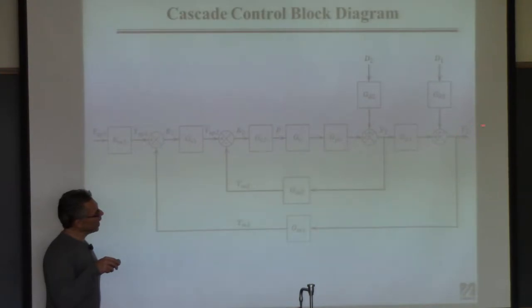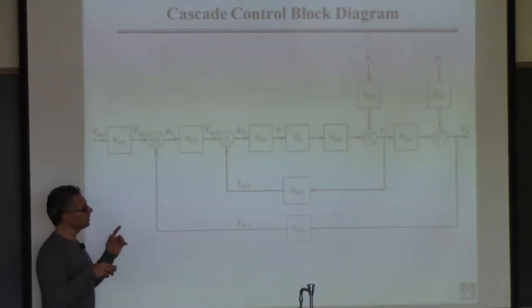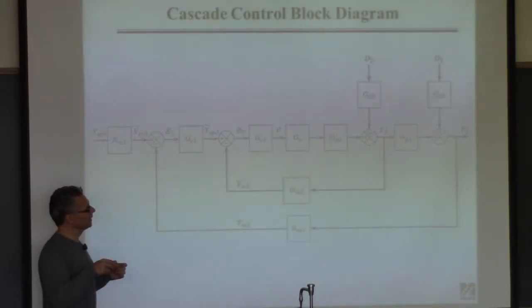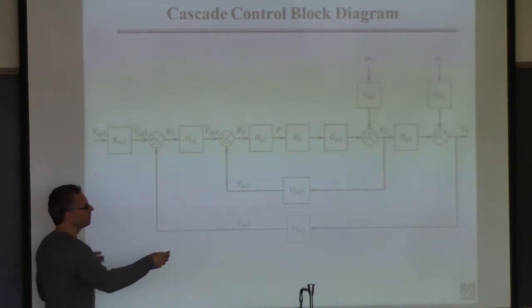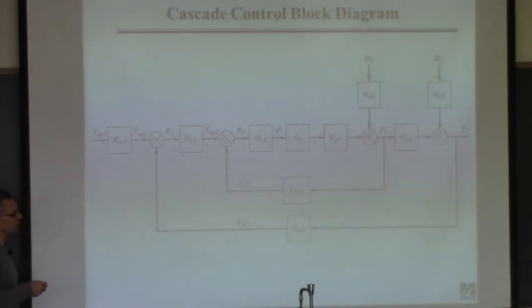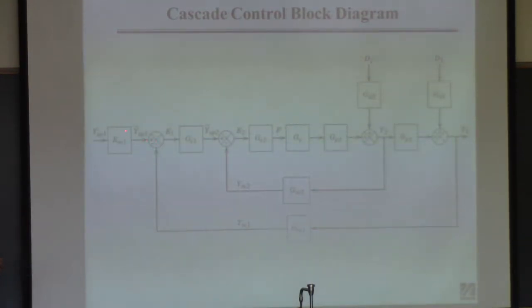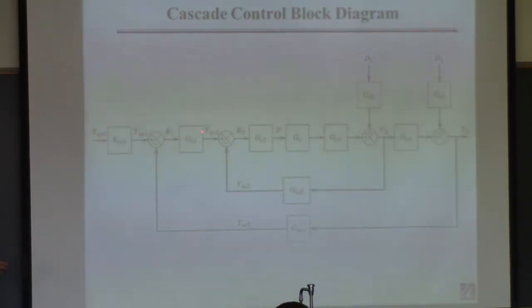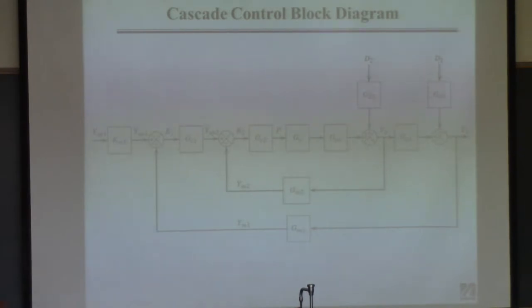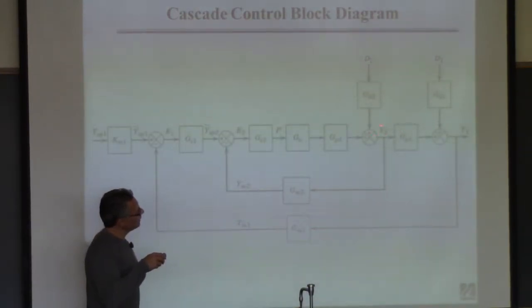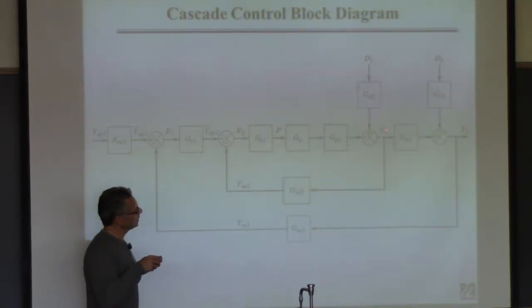We have our typical output here. Because we have two measurements and two controllers, we're differentiating everything by subscripts one and two. Subscript one means things having to do with the main control loop, and subscript two means things having to do with the inner loop, so we can keep them straight. There's the main output we want to control — we've got to measure it, compare it to a set point in the same units, generate an error signal, and this controller operates on that error signal and generates a set point for the inner loop. That's what cascade control is.